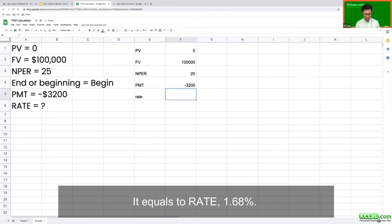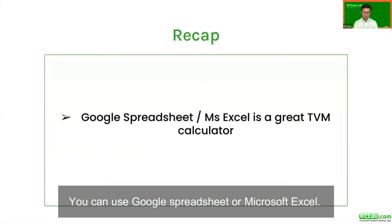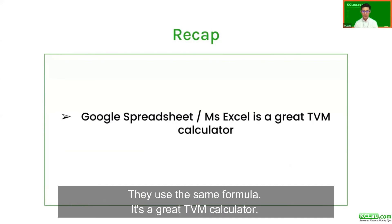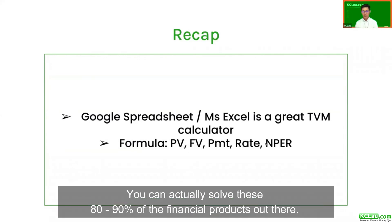For the insurance plan, the rate equals 1.68%. To recap: you can use Google Spreadsheet or Microsoft Excel — they use the same formulas. It's a great TVM calculator, and understanding just these few formulas lets you solve about 80 to 90 percent of financial products out there.